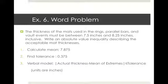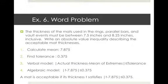The verbal model is: absolute value of the difference between actual thickness and the mean of the extremes (the ideal thickness) must be less than or equal to the tolerance. So the absolute value of (T minus 7.875) is less than or equal to 0.375. A mat is acceptable if its thickness T satisfies absolute value of (T minus 7.875) less than or equal to 0.375. Example 6 is working backwards from example 5 — related, but different.